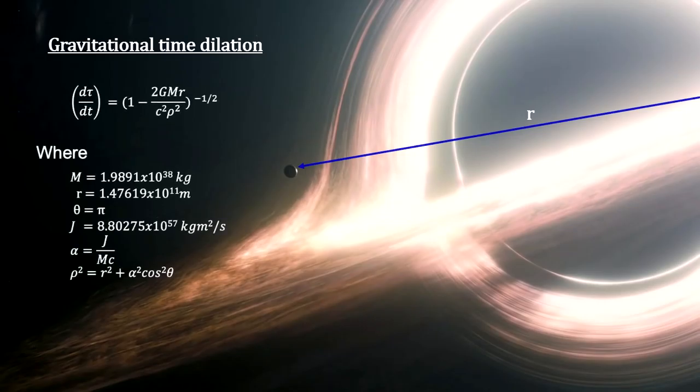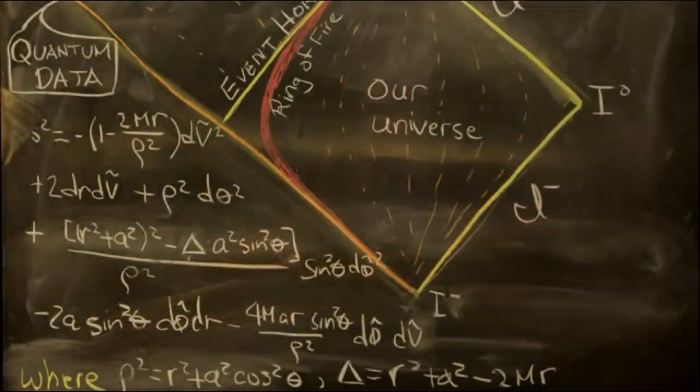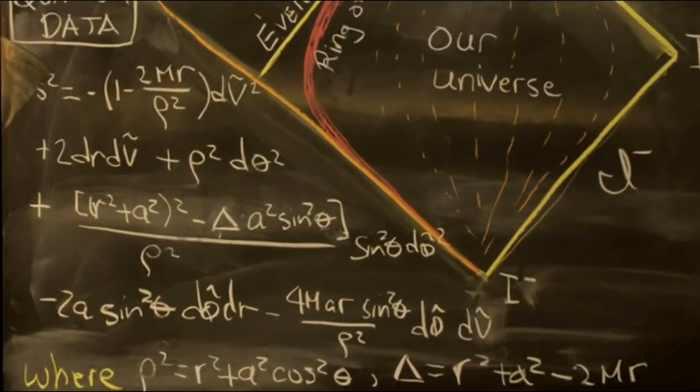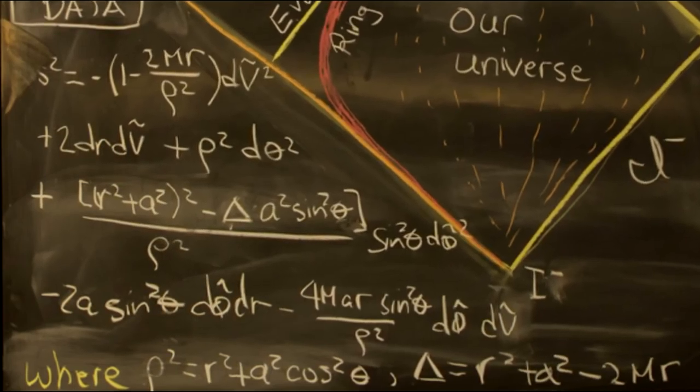But the bulk of the time comes from gravitational time dilation and the fact that Gargantua's rotational energy is so large. This intensifies time dilation considerably. If you watch the movie again, you might note that it is the Kerr metric on the professor's blackboard.